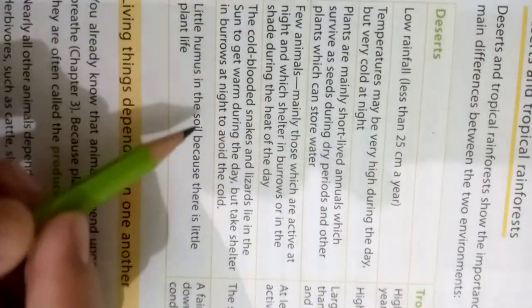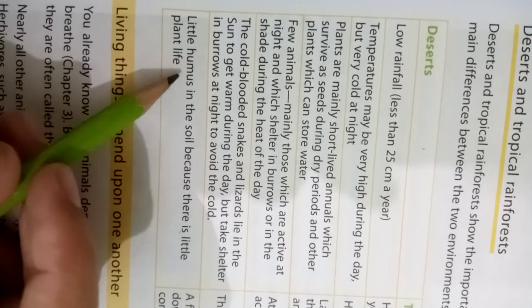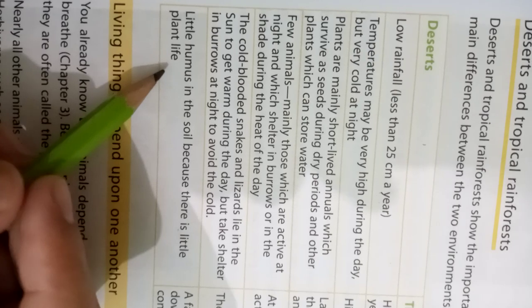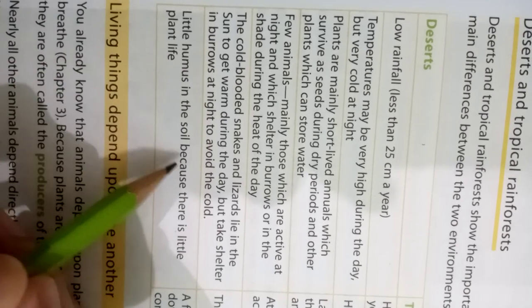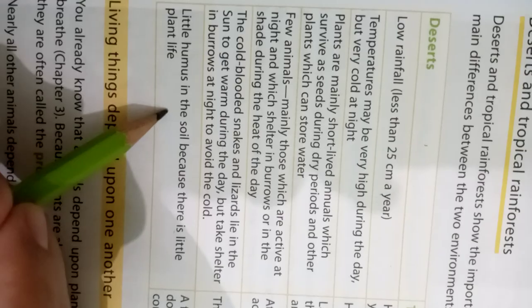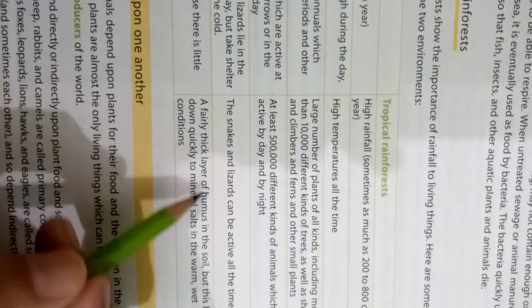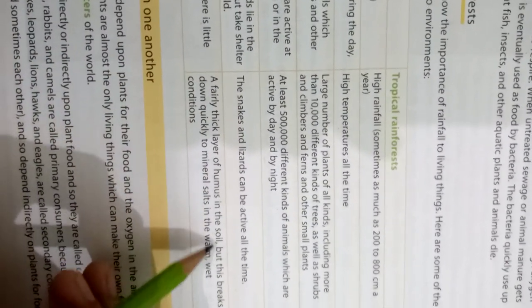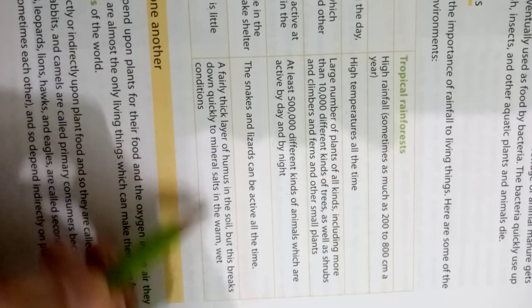There is little humus in the desert soil because there are very few plants. In the tropical rainforest, there is a thick layer of humus in the soil, though it breaks down quickly into mineral matter under the warm, wet conditions.